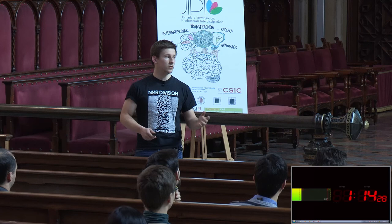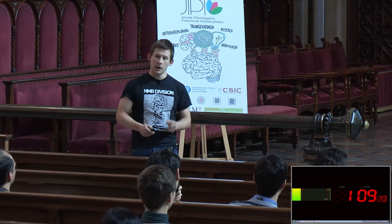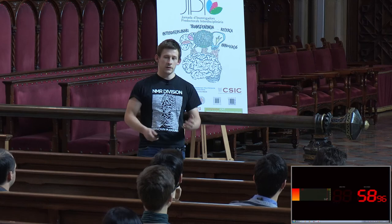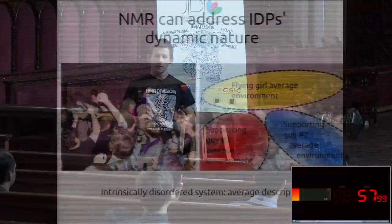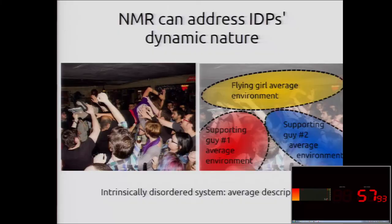Intrinsically disordered proteins are quite difficult to study because they move, and they move a lot. To illustrate this, imagine an intrinsically disordered audience in which everybody is moving. With one photo, you cannot describe the system. But if you measure the average environment in which some elements move, you can have a description of the system — you can see that this girl is going to be near the ceiling compared to the guy supporting her.